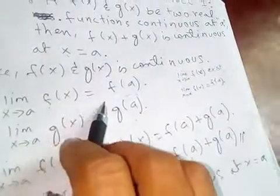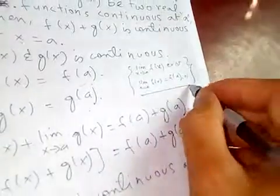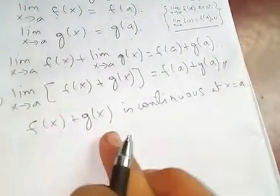And here we get again f of a. So which means these two conditions are satisfied, so this is continuous.